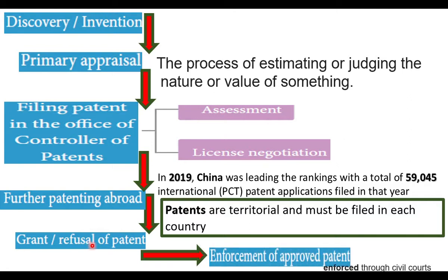When somebody violates the patent, enforcement of the approved patent will happen in civil courts. In the era of biotechnology, recombinant DNA technological products are very important Intellectual Properties. Many researchers are working in the field of biotechnology, so it is necessary to protect a researcher's right — that is protected by Intellectual Property Rights by getting a patent certificate. In the next part, we shall discuss a new topic. Thank you.